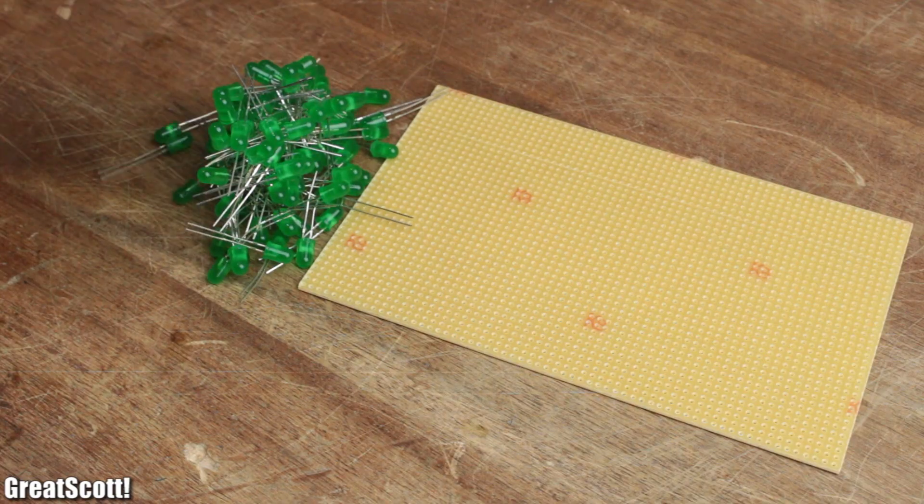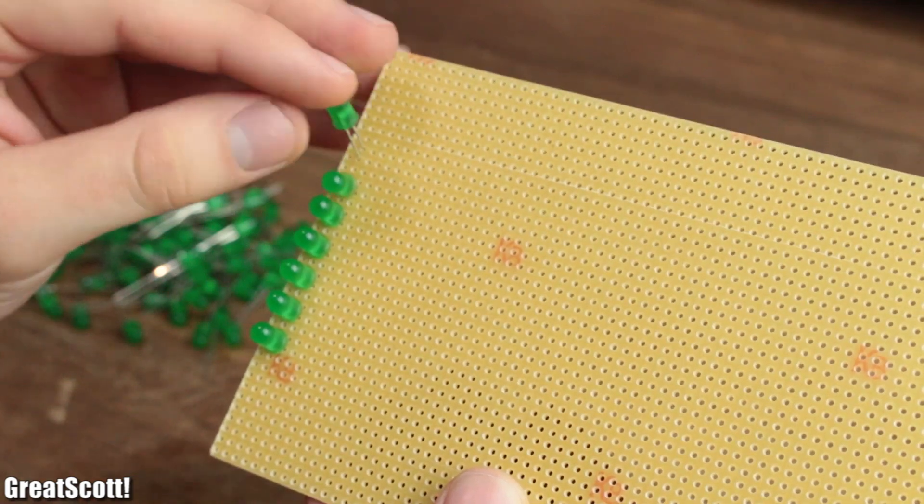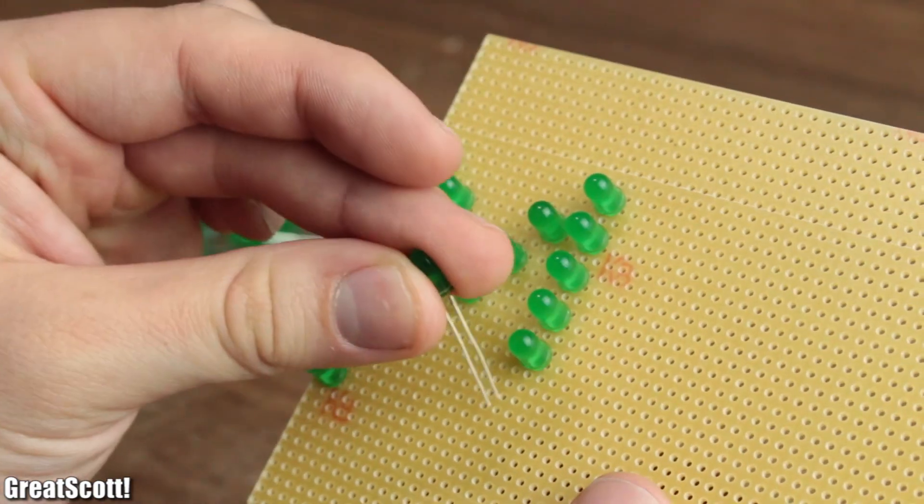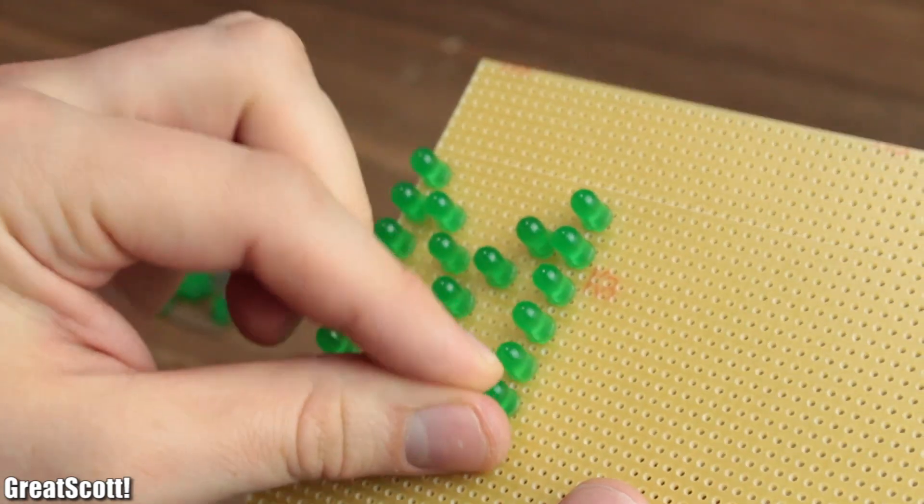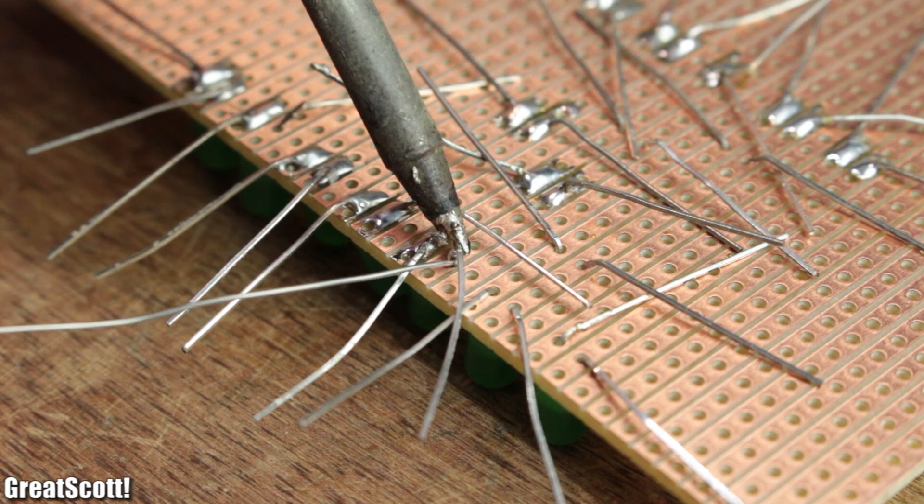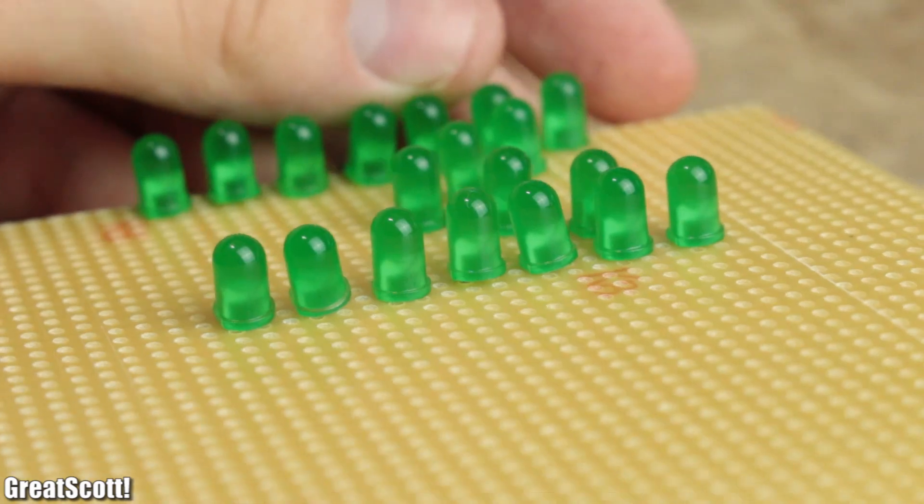I gathered my LEDs and started placing them on the board to write the first letter. Make sure though that the anodes and cathodes all face the same direction. In my case, the anodes face upwards. To solder them in place, I simply bent their leads and after soldering snipped them off.